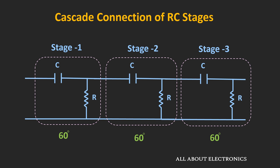Using three stages, it is possible to achieve 180 degrees of phase shift, where each stage provides 60 degrees. The overall phase shift introduced by the three stages equals 180 degrees. However, due to the loading effect of the other stages, the actual phase shift provided by each stage will be slightly different, but the overall phase shift will still equal 180 degrees.